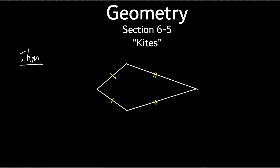Here's what our first theorem says — this is not the definition, this is the theorem. It says exactly one pair of opposite angles in a kite are congruent. So only one pair. Which one? It's the angle between the two sides that are not equal to each other. Those two angles are going to be equal.